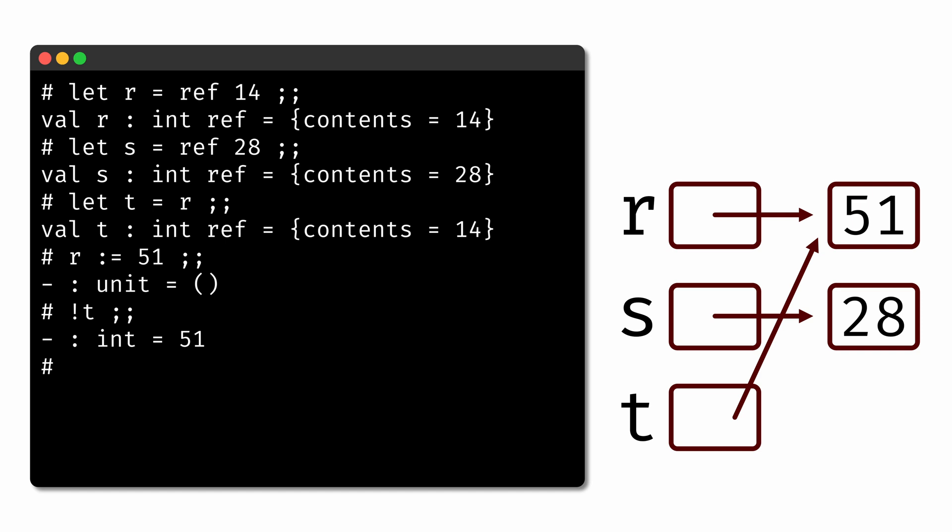These new operators give us the ability to work with references to memory, much like programming languages like C. But OCaml's strong type system means we can do so without needing to worry about the kinds of memory-related vulnerabilities and errors that we would have to concern ourselves with in C.